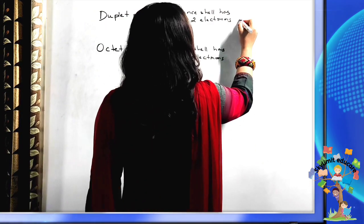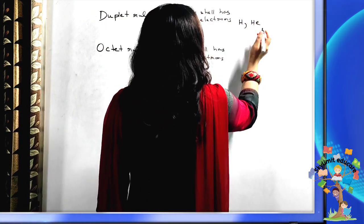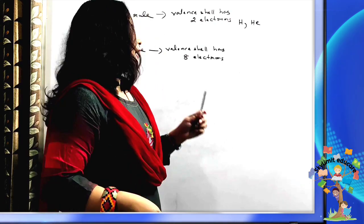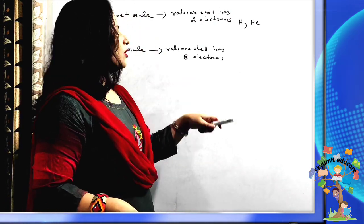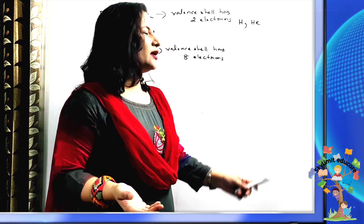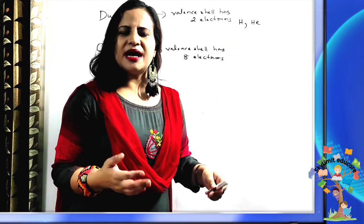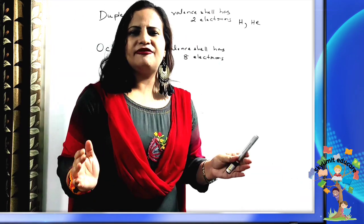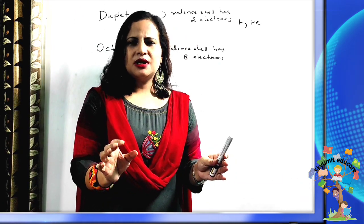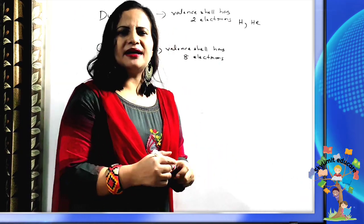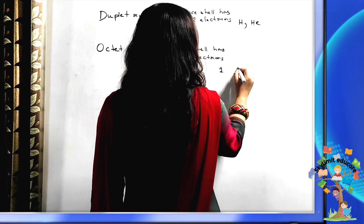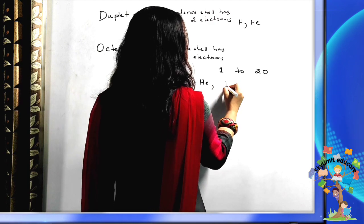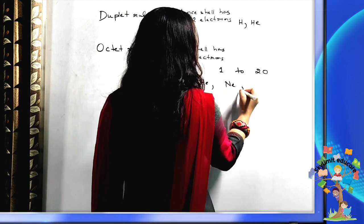Duplet rule is applicable only for hydrogen and helium, because they have only 1 and 2 electrons respectively. The octet rule is applicable for all other elements except hydrogen and helium. Among the first 20 elements, we have helium (2He4), neon (10Ne20), and argon (18Ar40).